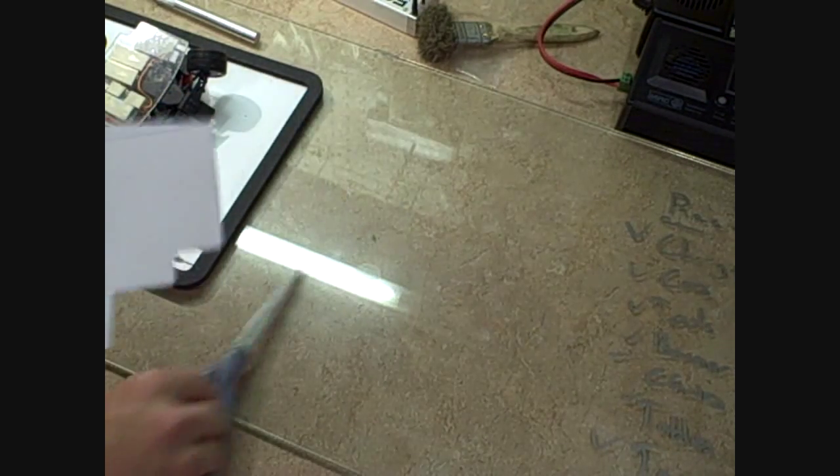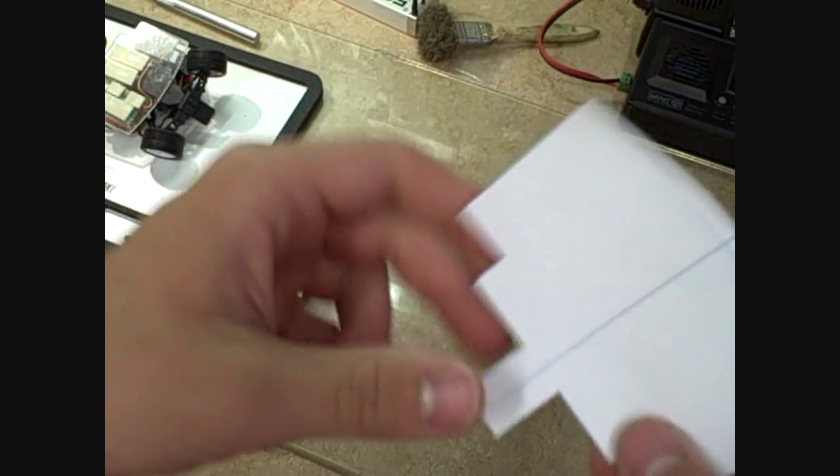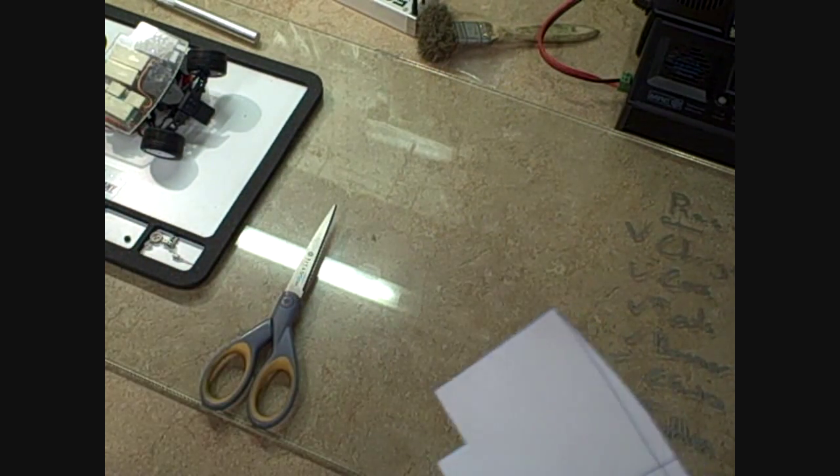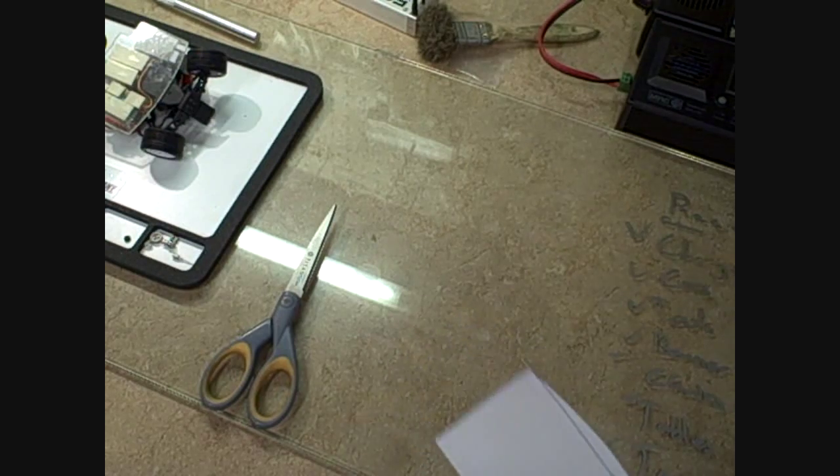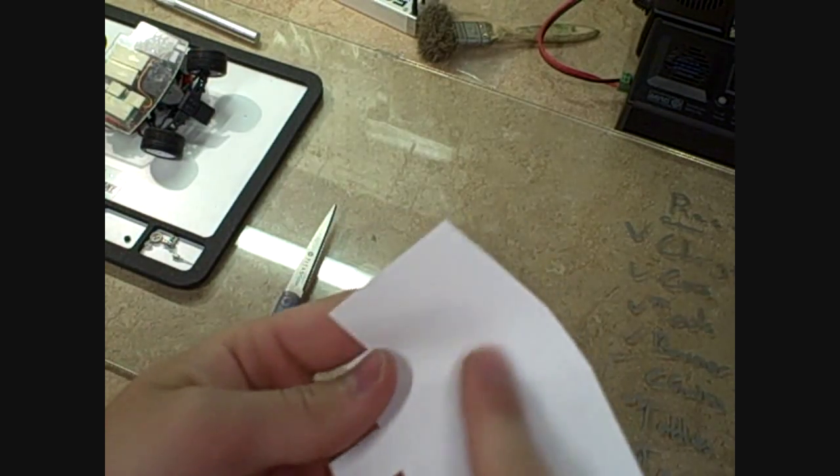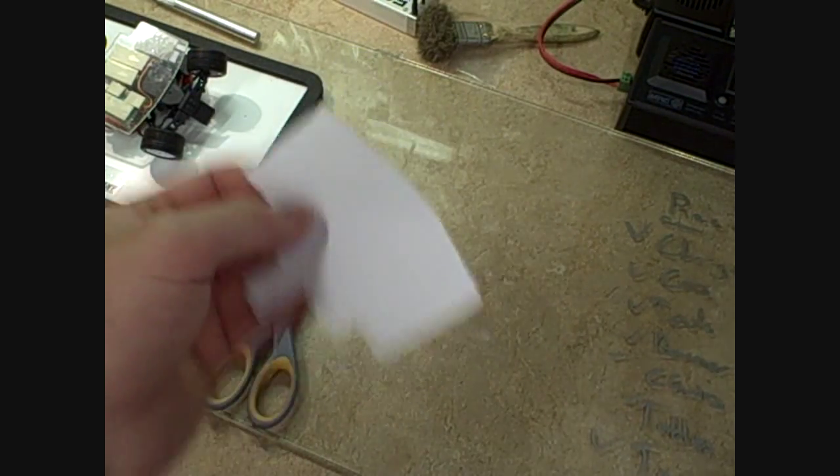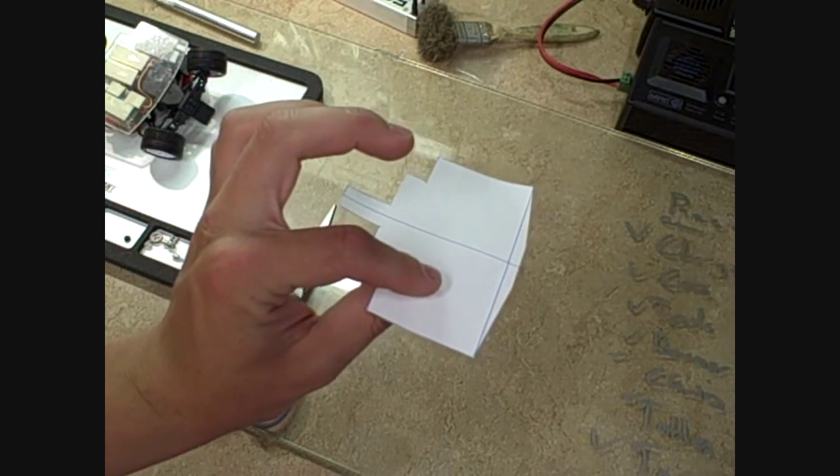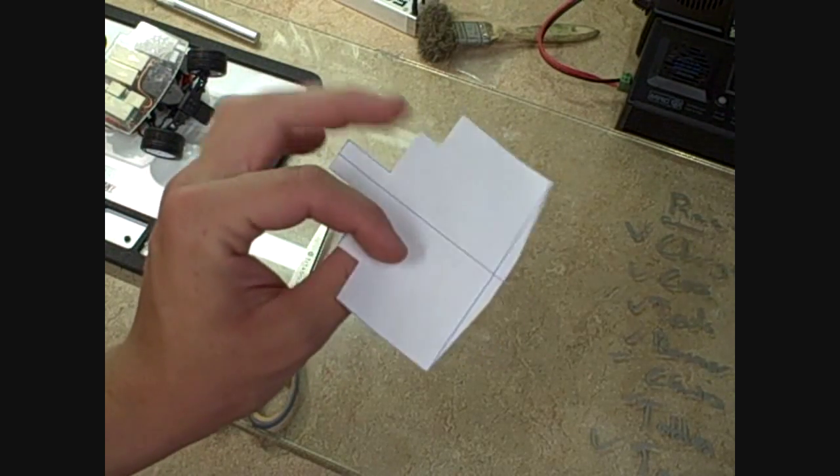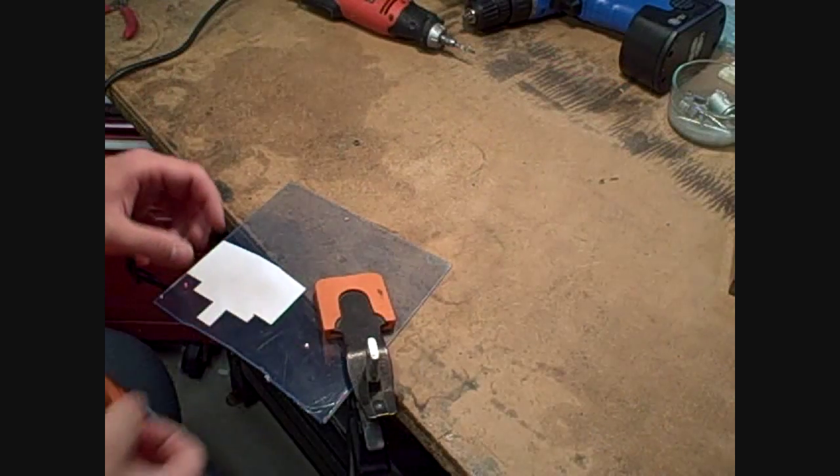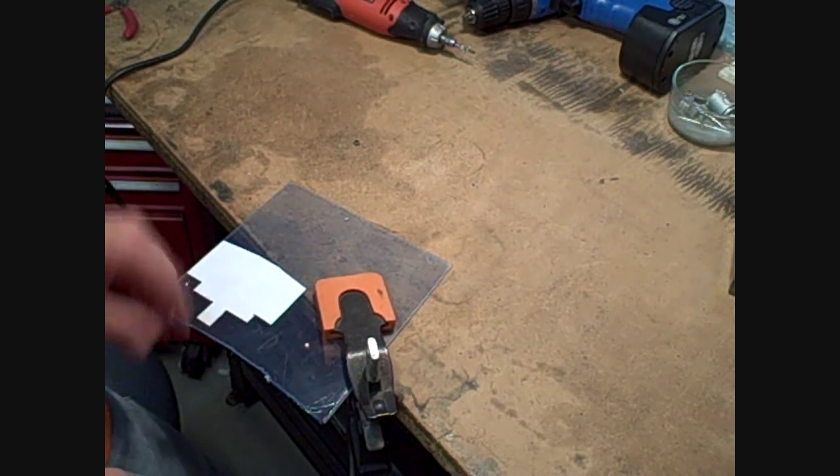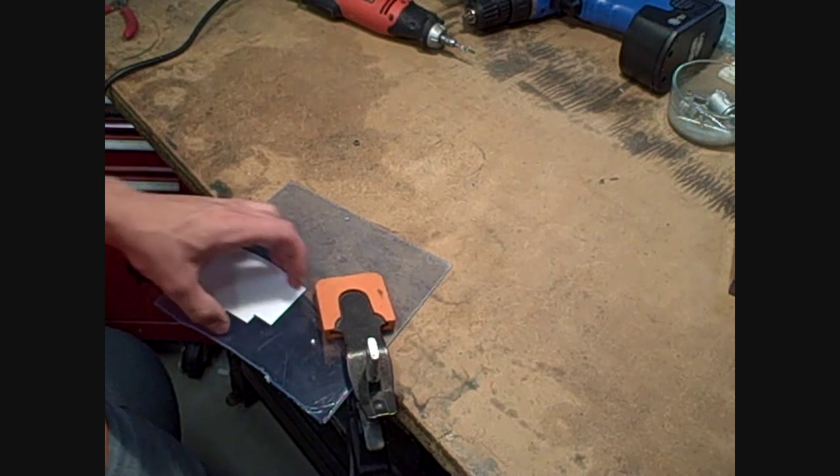Now you got your template here. Basically what you're going to do is you're going to take double sided tape and stick it on the back, and you're going to stick it on your material that you're going to be cutting. In this case, plexiglass.